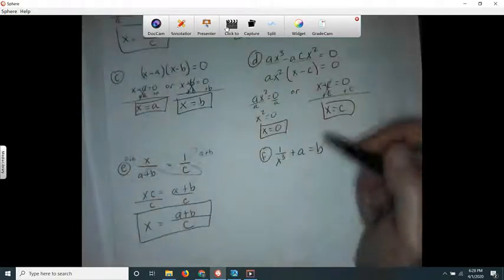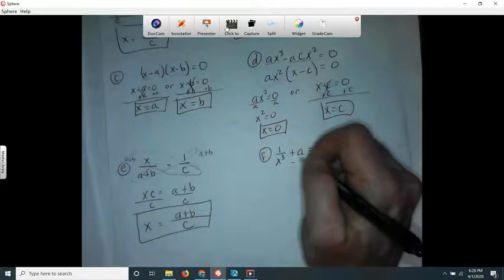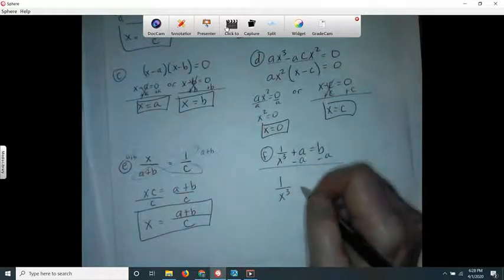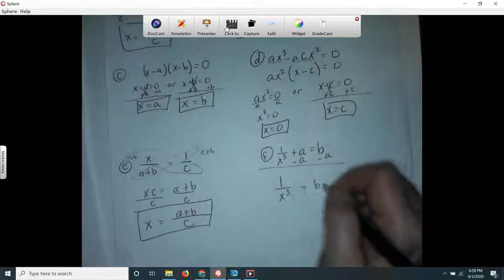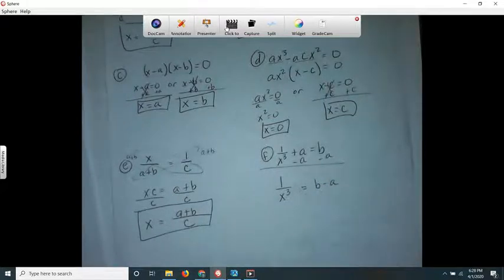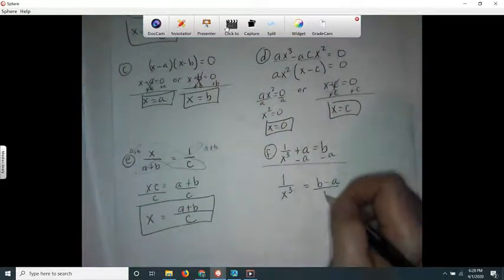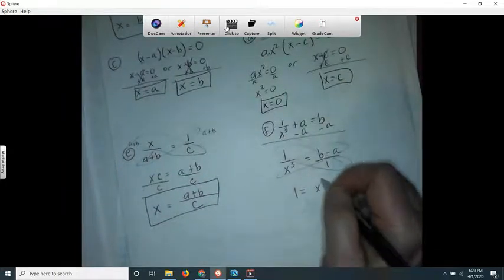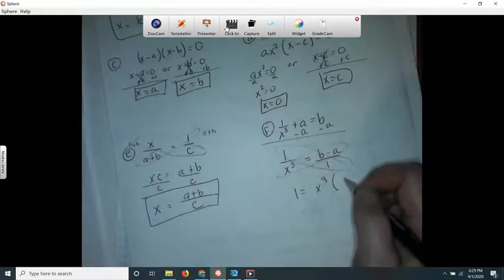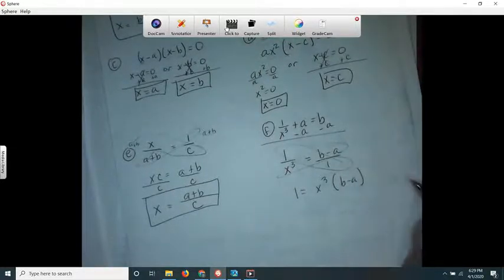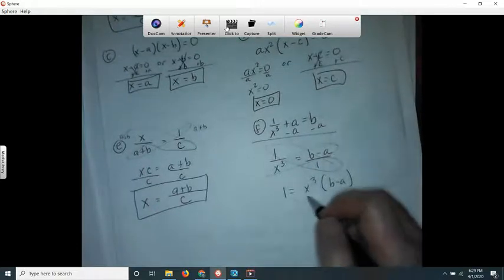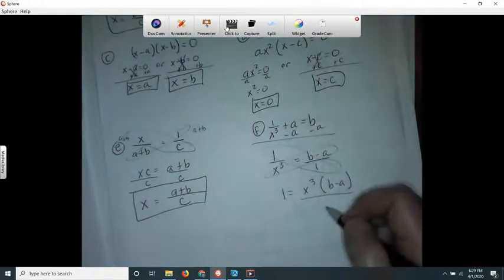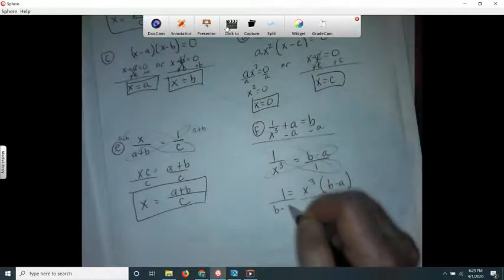And then this one, I think I will subtract a from both sides first. 1 over x cubed equals b minus a. Well, I can't stop doing cross products, I love them so much. 1 equals x cubed times b minus a. Okay, I should have just flipped them both upside down now that I see.